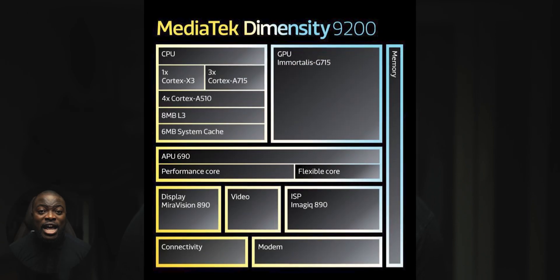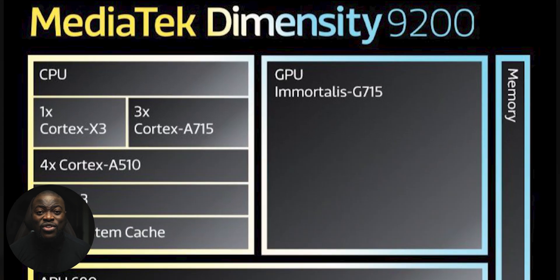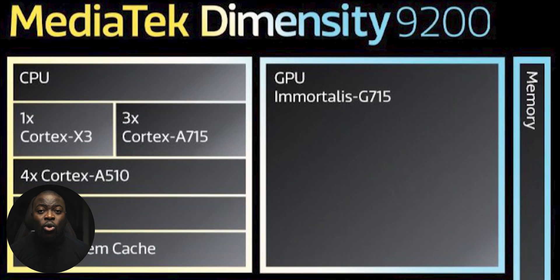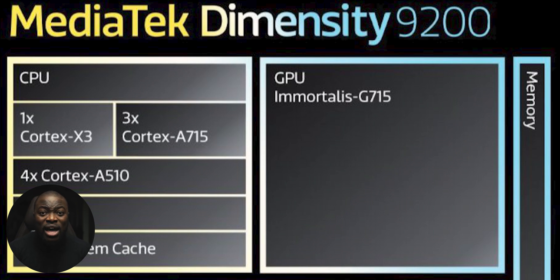The Dimensity 9200 is based on an 8-core design with a 1-3-4 configuration, using one prime Cortex X3 core at 3.05 GHz and three performance Cortex A715 cores at 2.85 GHz supporting 64-bit operations only, and four efficiency revised A510 cores at 1.8 GHz.